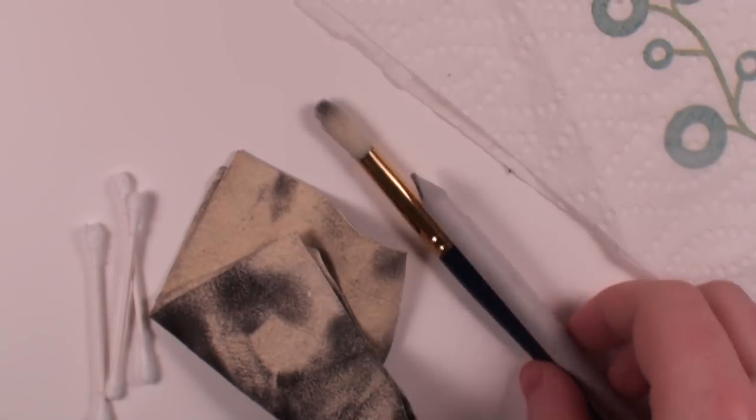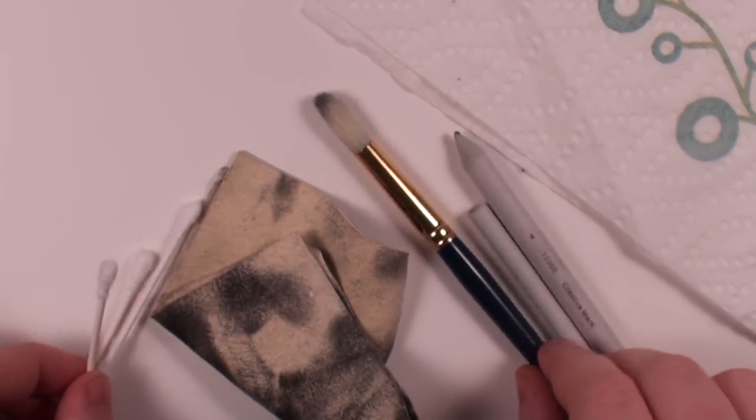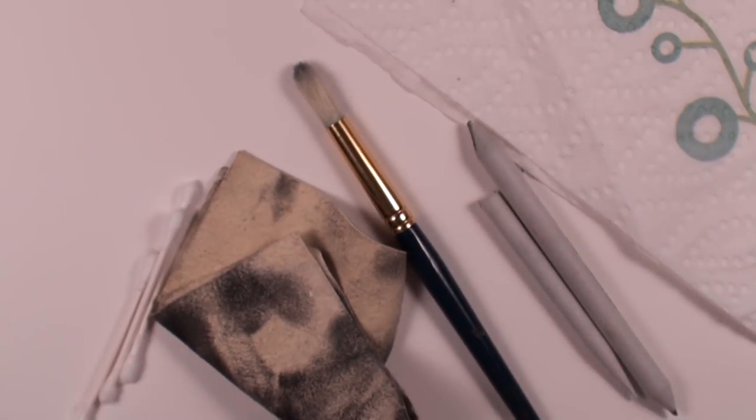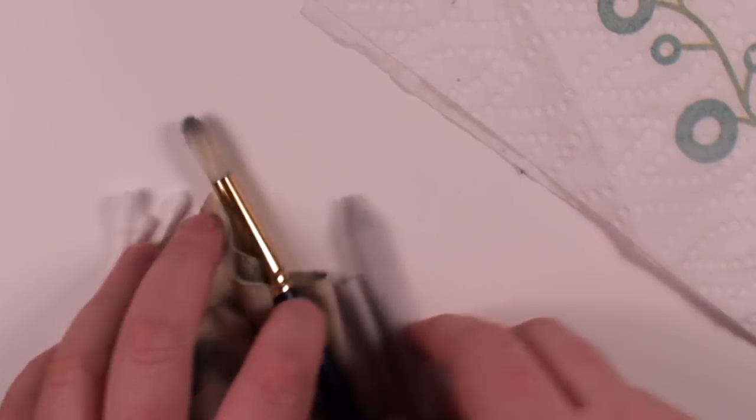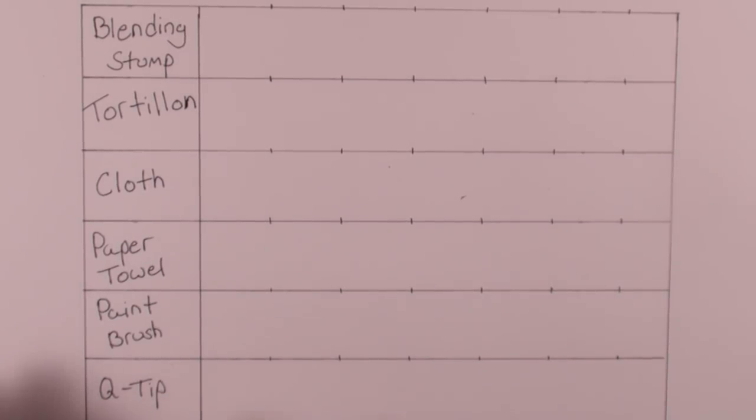I've prepared something to show you the difference in these blending materials and they range from ordinary blending stumps to q-tips and paintbrushes which normally aren't really used for blending at all. Here you can see I have made a chart showing different materials I'm going to be using. To demonstrate them I'm going to use an HB pencil which is your normal standard typical pencil.